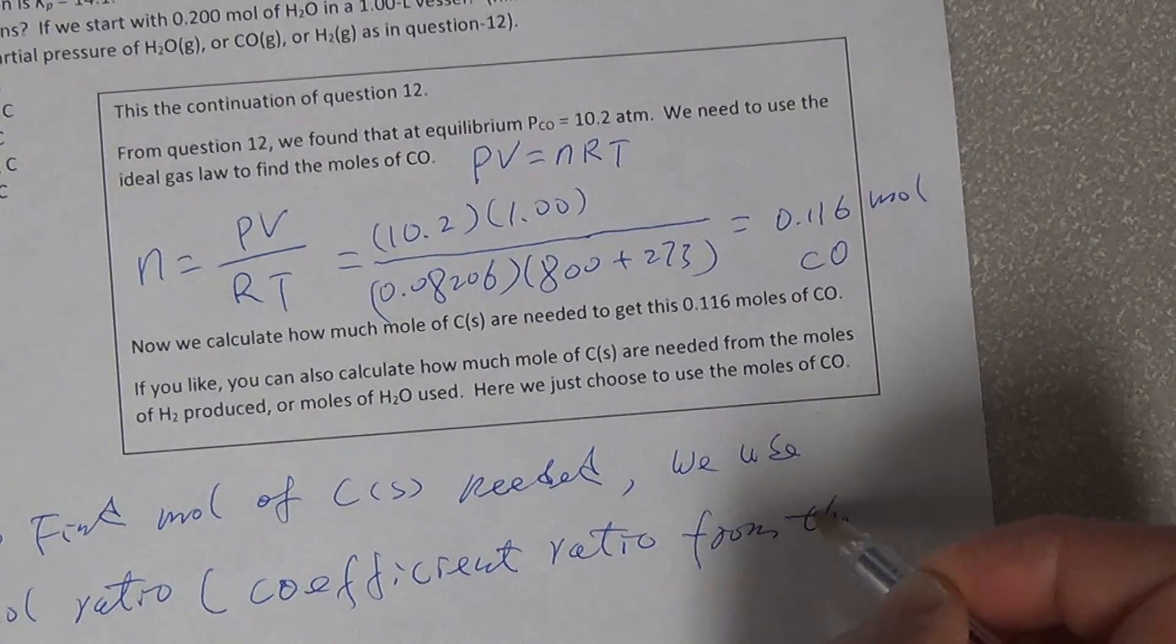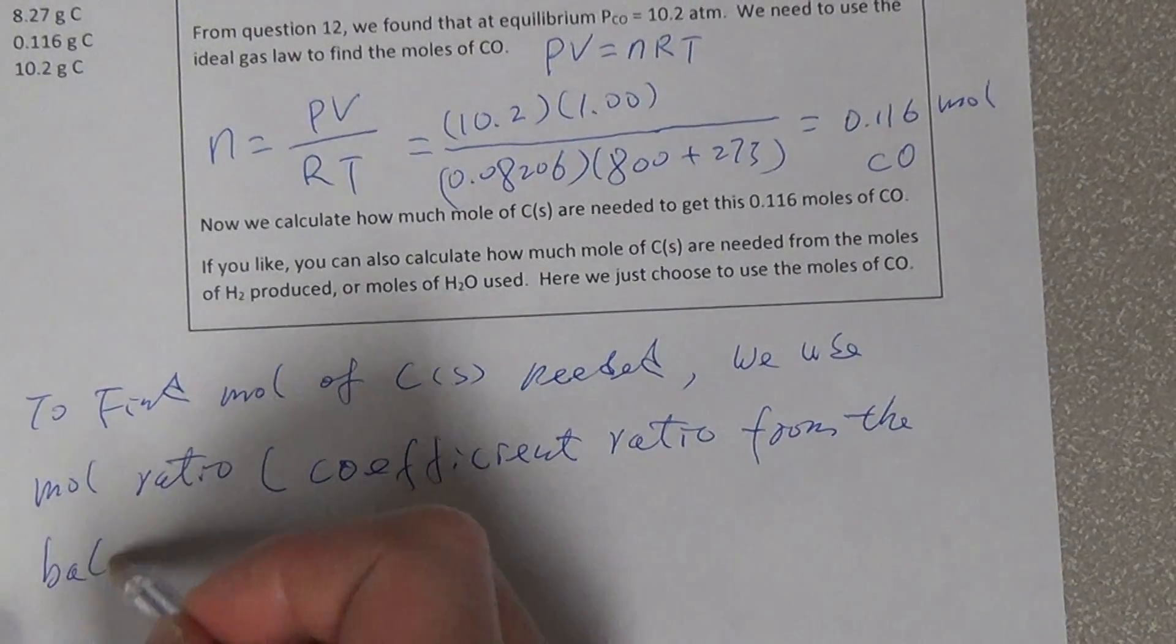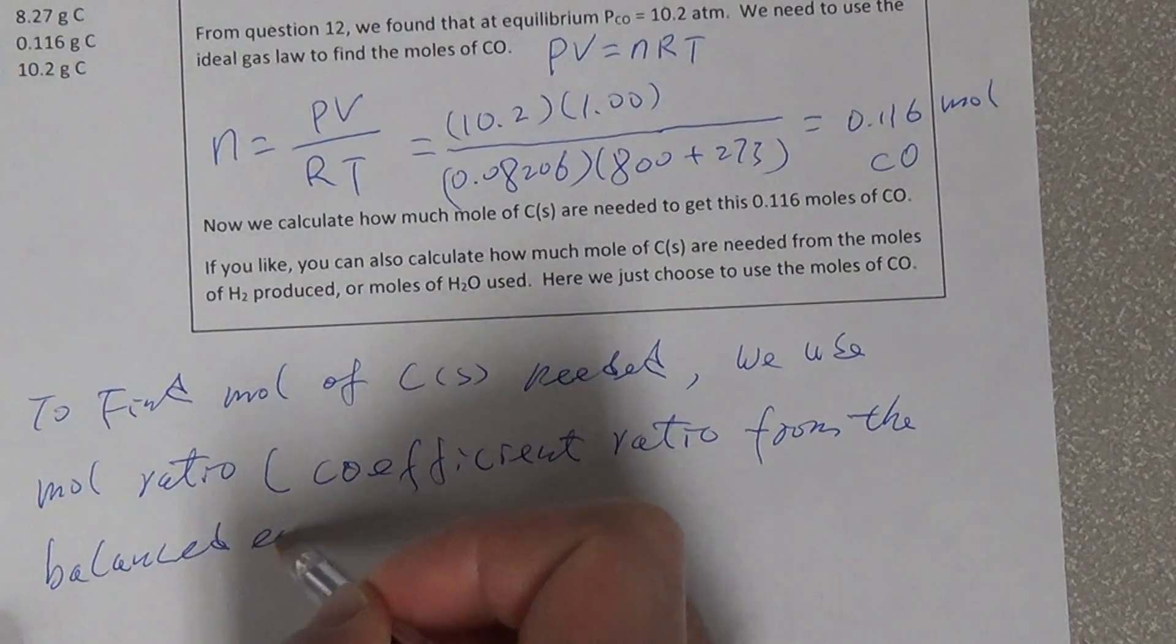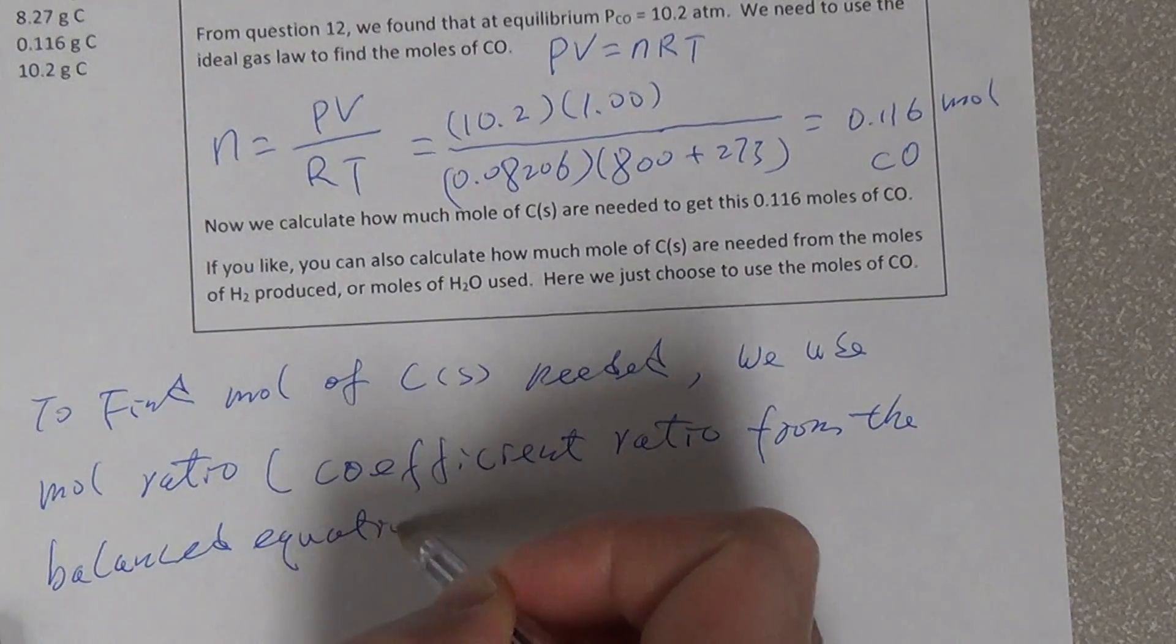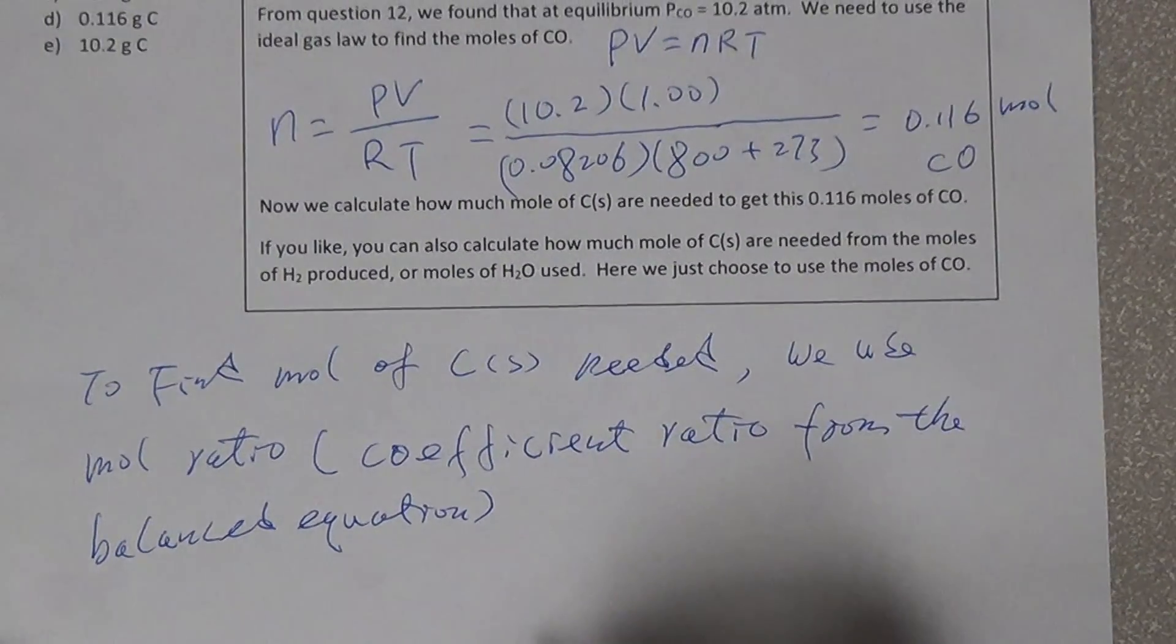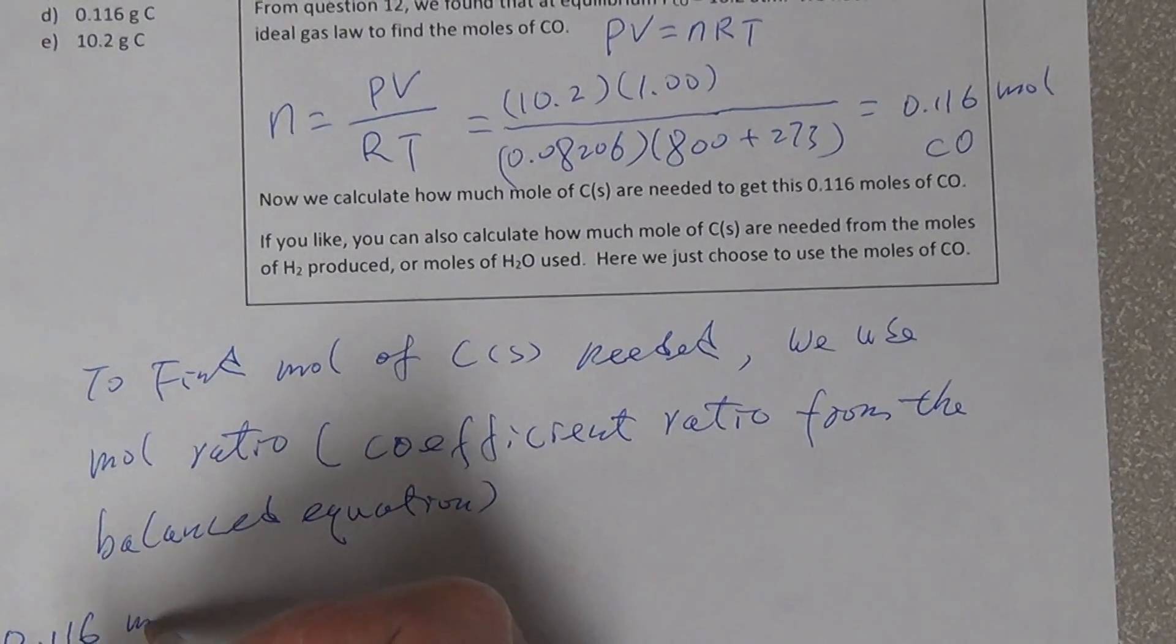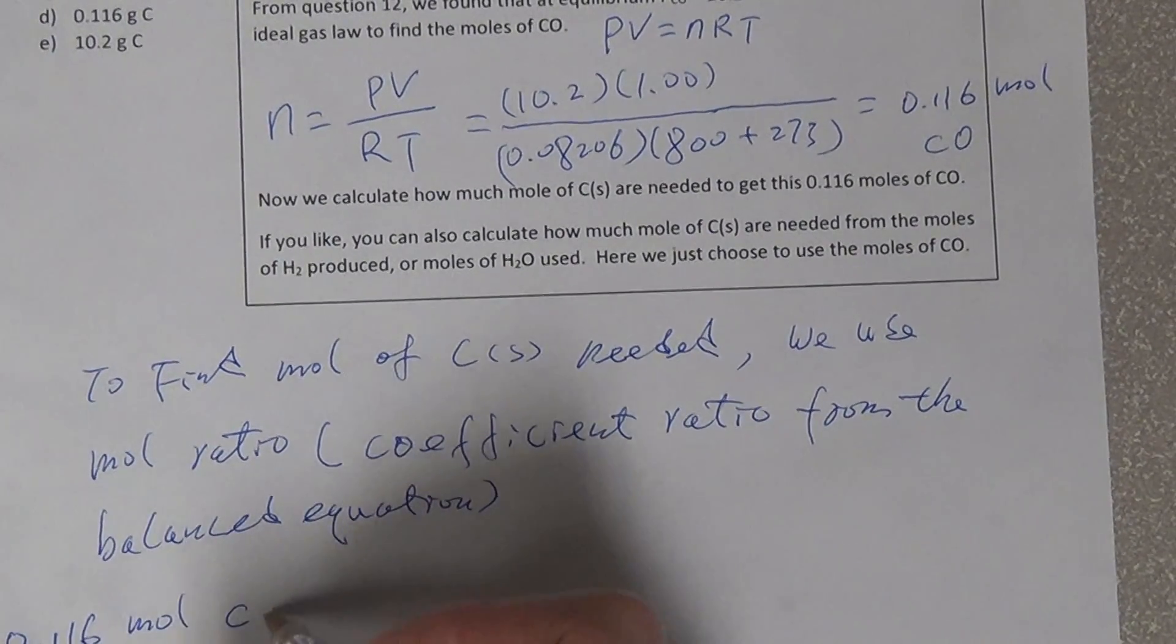Okay, so we start with 0.116 moles of CO. So we want to cancel out the CO and get the C solid.